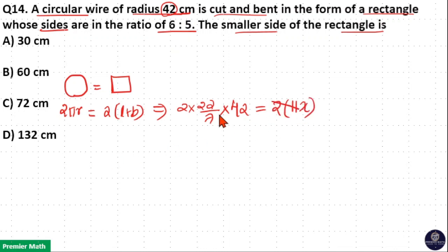Now 2 into 11 cancel. 7 goes 6 times in 42. 2 into 6 is 12.